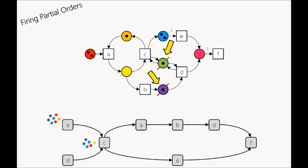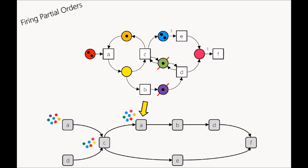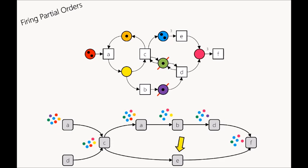Firing d brute-force in the empty marking leads to one negative purple token and a pink token. We update the local marking of c, remove the purple one, and add a pink one. We fire c in its local marking, which is fine, producing a local marking with a green, three blue, a pink, orange, and a red token. This marking is pushed to c's first successor. We fire a in its local marking, then fire b, then fire d in its local marking, producing a local marking at f.